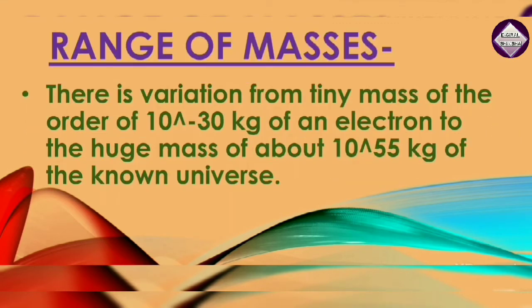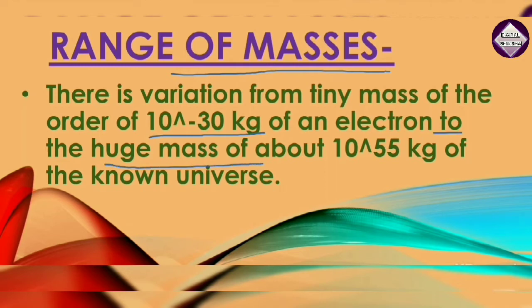Next is the range of masses. We see that the masses of objects vary over a wide range. These vary from the tiny mass of an electron, of the order of 10⁻³⁰ kg, to the huge mass of about 10⁵⁵ kg of the known universe.